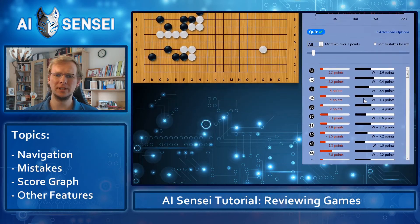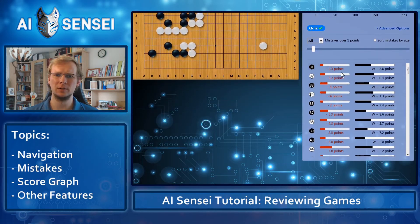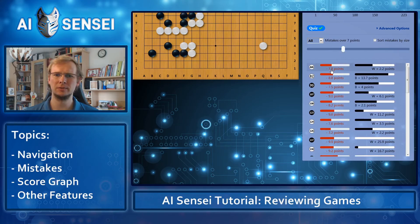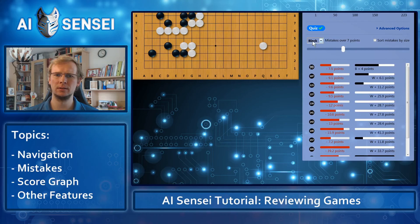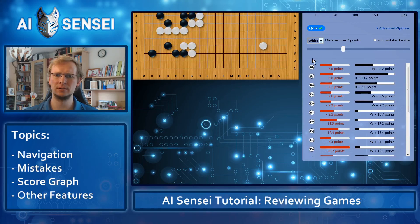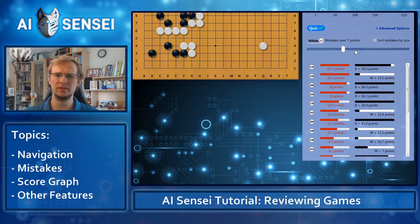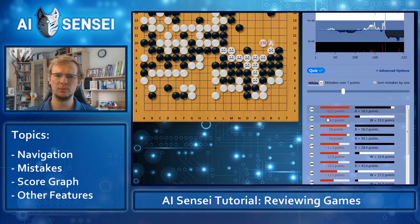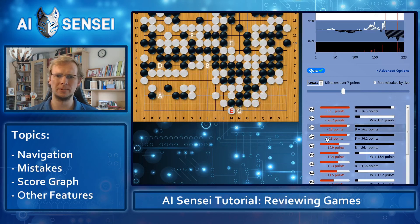Below, you see a more detailed list of all the mistakes depending on the current settings. You can also filter this list to show only the black or only the white mistakes. Finally, you can sort them to show the biggest mistake first — that's another way to quickly browse the most important points in your game.